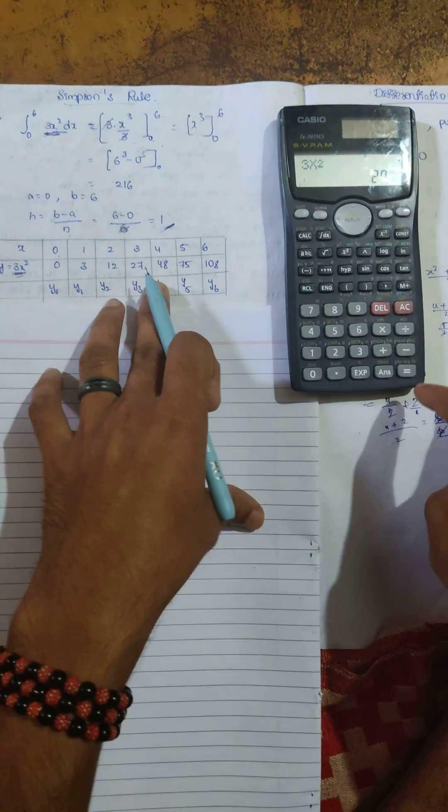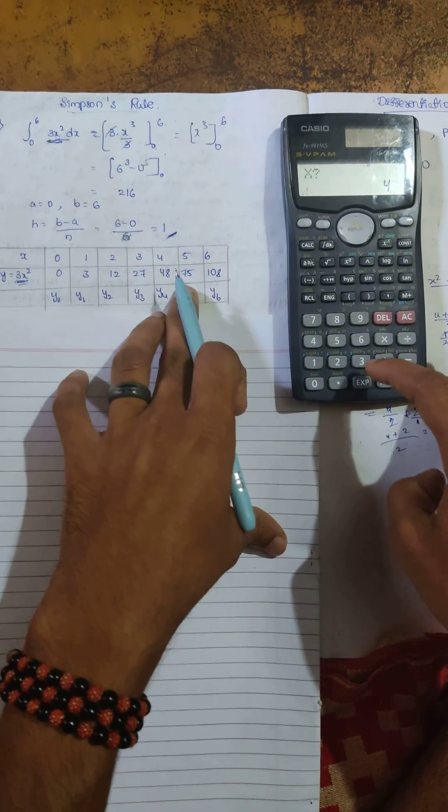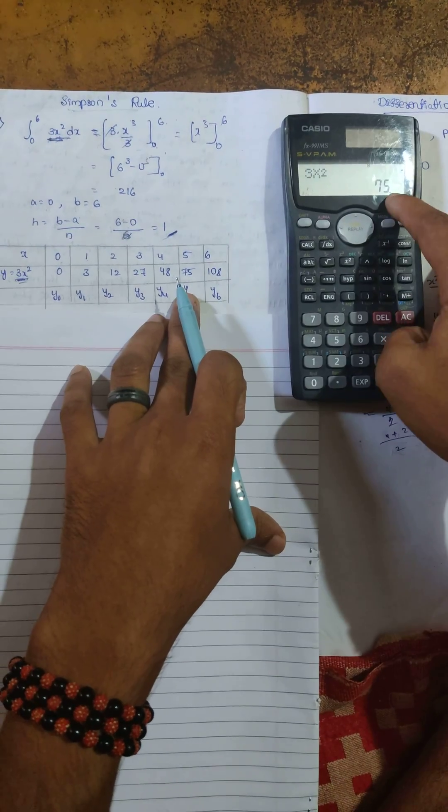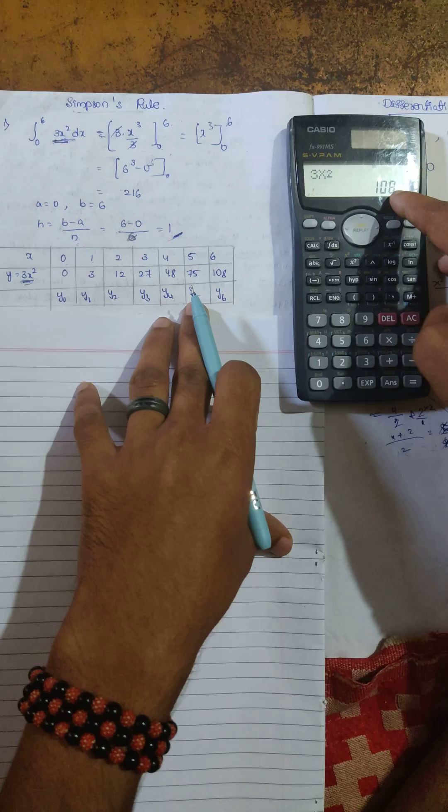When x equals 4, we get the answer 48. When x equals 5, we get the answer 75. When x equals 6, we get the answer 108.